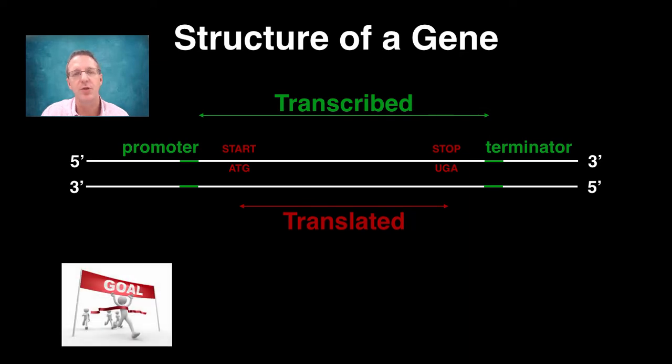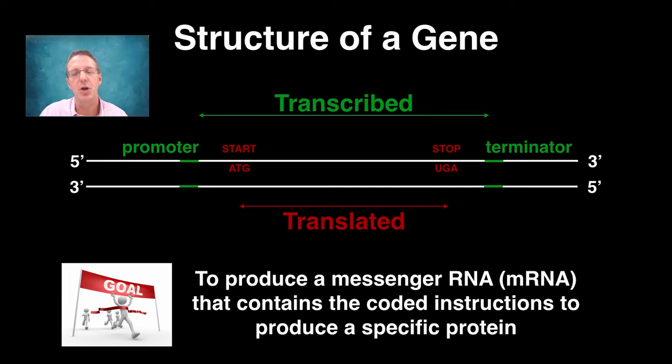So the goal of transcription is simple. It is to produce a messenger RNA that contains the encoded structures to produce a specific protein. Transcription can be separated into three parts: initiation, elongation, and termination. So let's have a look at those and see how they work.